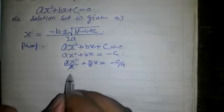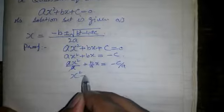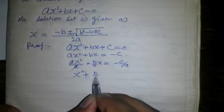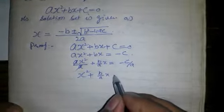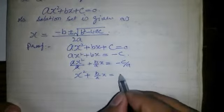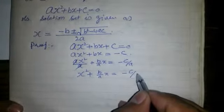This A cancels each other, so we have x² + B/A·x = -C/A.